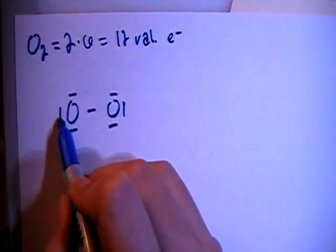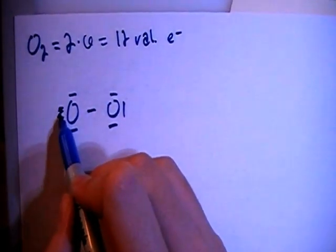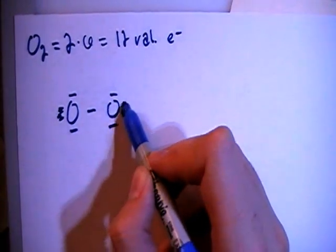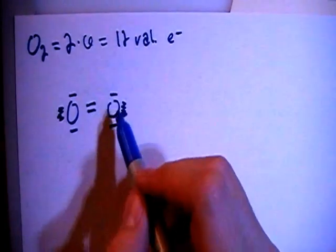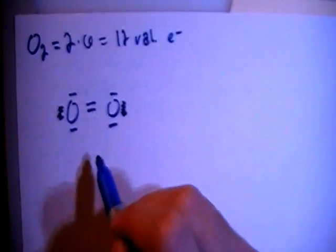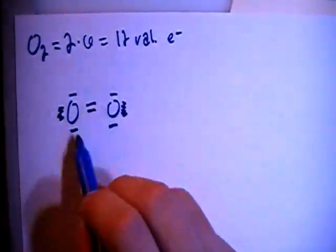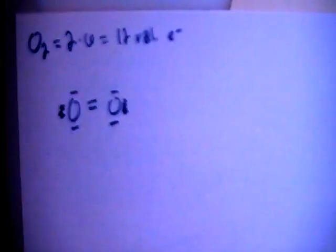So we're going to have to move some around. Let's move this non-bonding pair and this non-bonding pair and just make a double bond in the center here. So now we have 2, 4, 6, 8, 10, 12 electrons, which is what we're looking for. And each oxygen has their full octet, full 8 electrons.